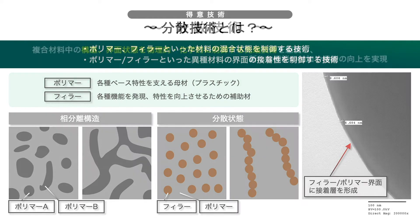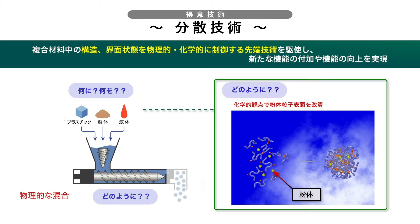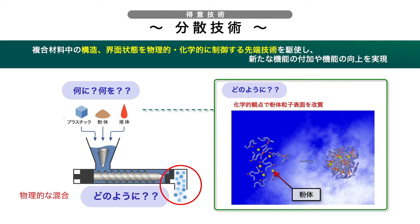分散技術とは、ポリマー・フィラーといった物質の組み合わせによって形成される相分離構造、フィラーの分散状態といった複合材料中の組織構造や、フィラー・ポリマー間の接着性を制御するための技術です。我が部には、複合材料中の構造を求められる機能に合わせて制御するための先進技術がございます。何に、何をといった材料設計から、どのように混ぜ合わせるかといった物理的な混合プロセスの開発、どのように反応・処理するのかといった科学的視点での開発までを一貫して支援可能です。